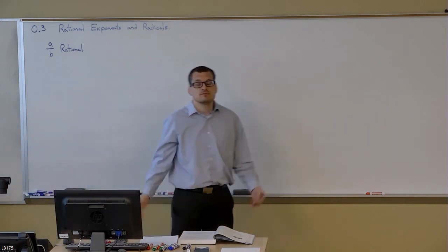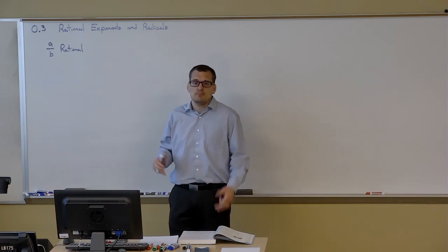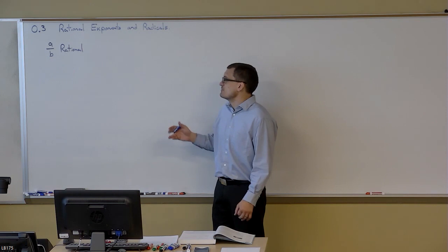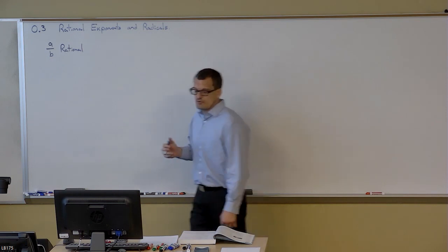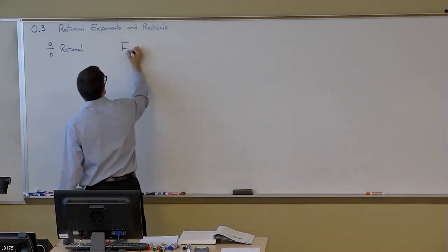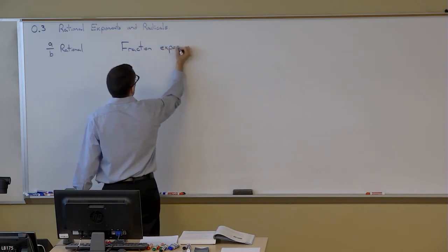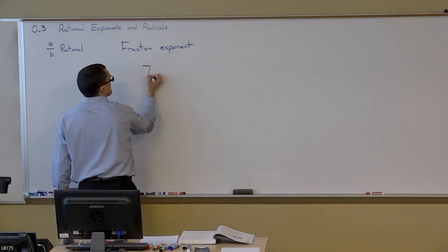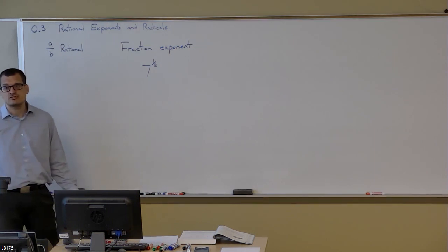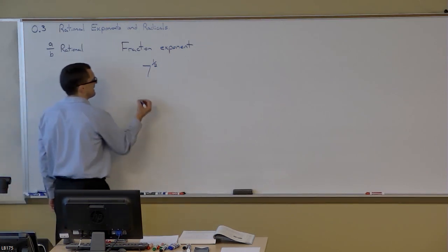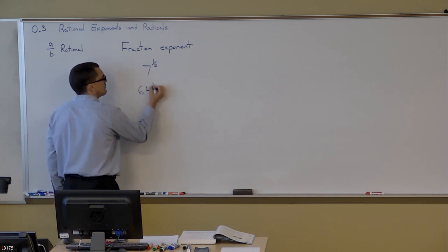As we saw, all integer exponents are actually rational exponents, but that's not the interesting part. The interesting part is when these are actually fractions. For instance, what happens when we take seven to the one-half power? What does that actually mean? Or what does it mean if we take 64 to the one-half power?